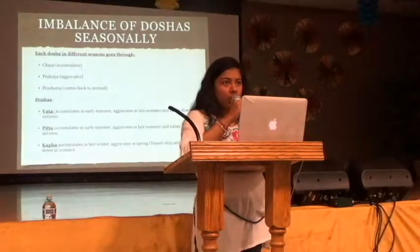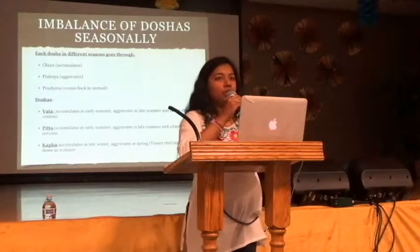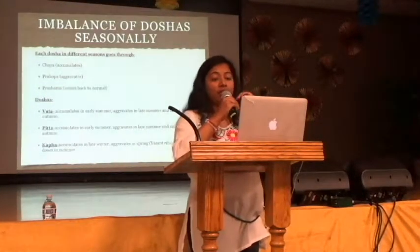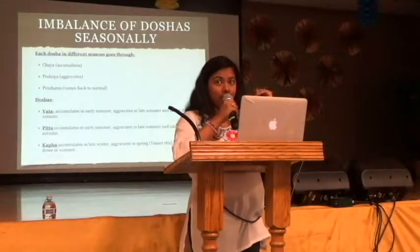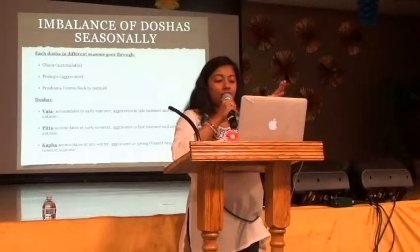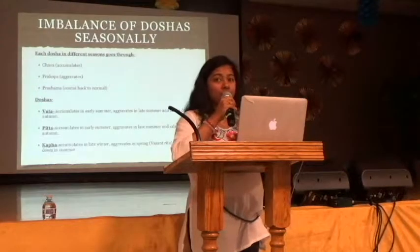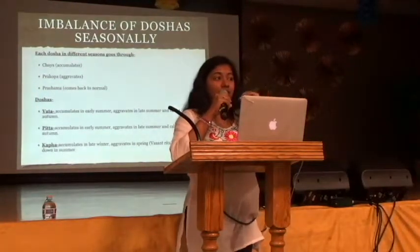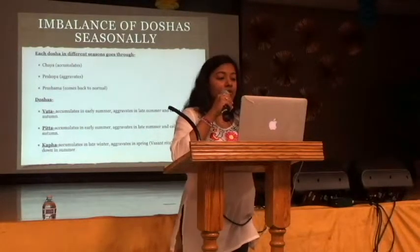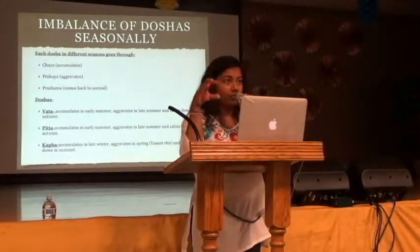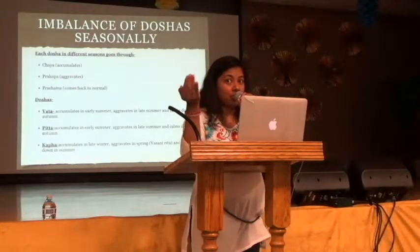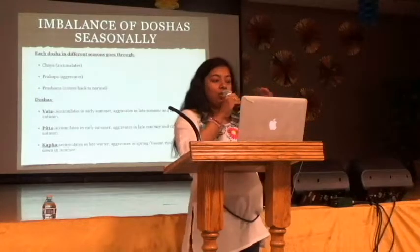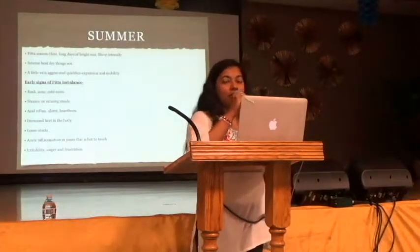Vata starts to accumulate during early summer, aggravates in late summer, and calms down in fall and on. Pitta usually accumulates in early summer, aggravates in late summer — which is right now, we are in the very pitta season — and calms down in autumn. Kapha accumulates in late winter, aggravates in spring, and calms down in summer. Sometimes because of the high heat, the kapha starts melting, and people fall sick just right before fall because of that heat.